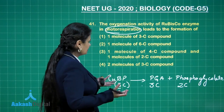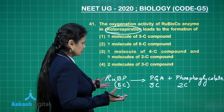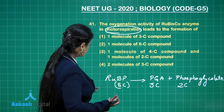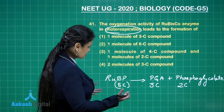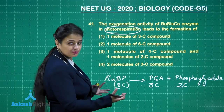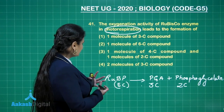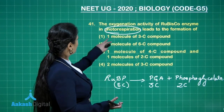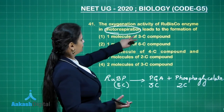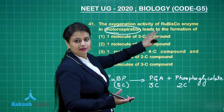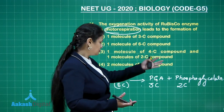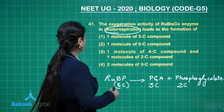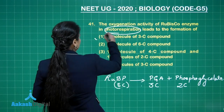If you look at the options, we don't have even a single option that lists both these products. So our best answer here is one molecule of the three-carbon compound. Surely one PGA is present, so this is our right answer.